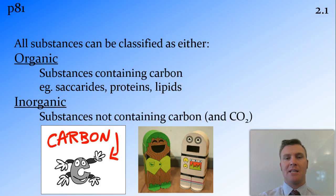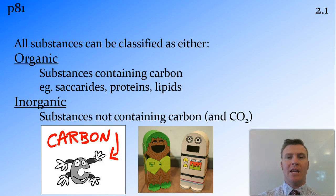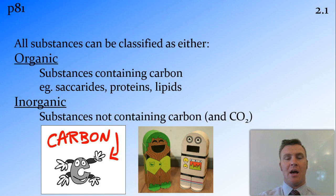All substances can either be classified as organic or inorganic. Organic substances contain carbon, so examples include proteins, lipids, as well as carbohydrates or saccharides. Inorganic substances are ones that do not contain carbon, except for carbon dioxide, which is counted as inorganic even though it does contain carbon. Carbon is a wonderful element that makes up pretty much everything inside us — all living things are generally made of organic molecules containing carbon.